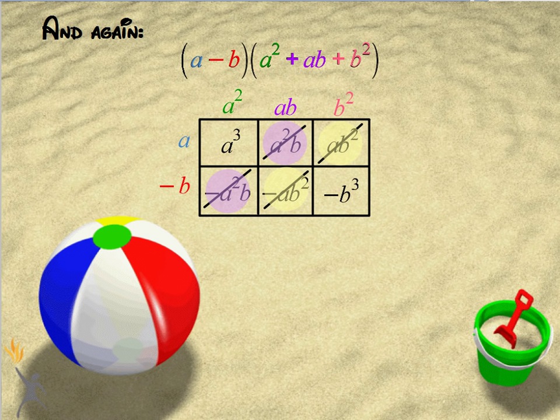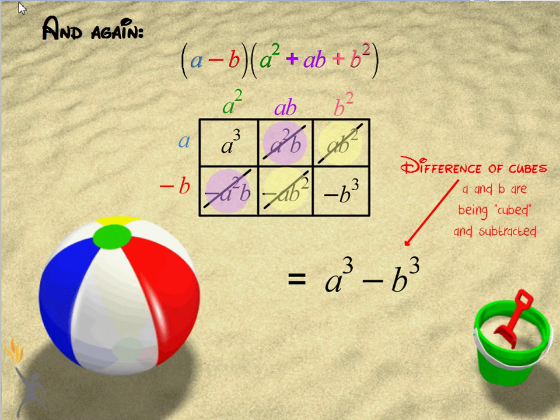Now I'm almost left with the same thing, just a little bit different. Like I said, I changed some signs, and I end up with what's called the difference of cubes this time. Again, a and b are objects that are being cubed and subtracted. Difference of cubes.